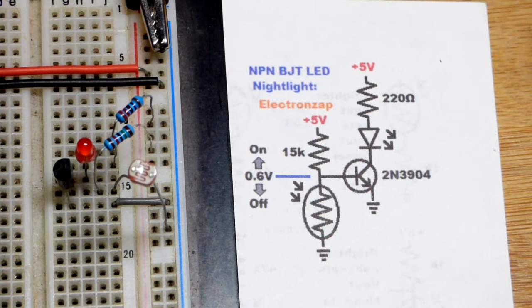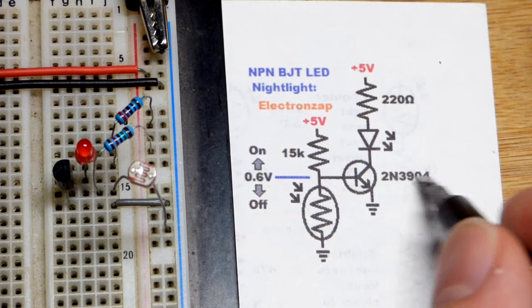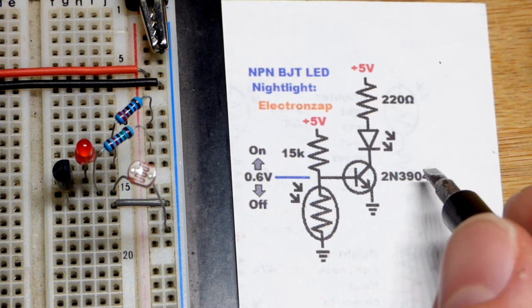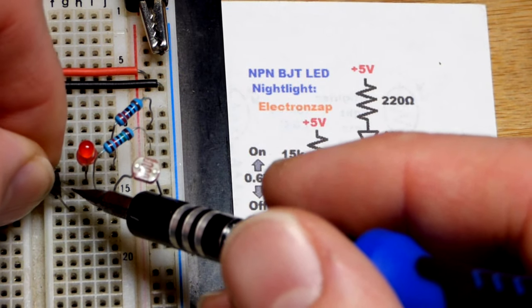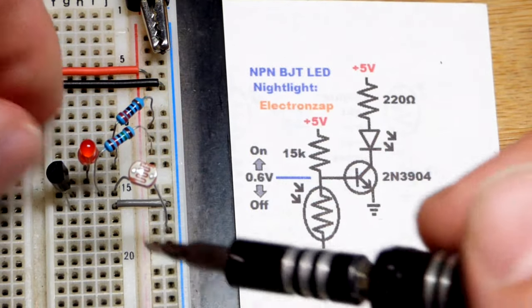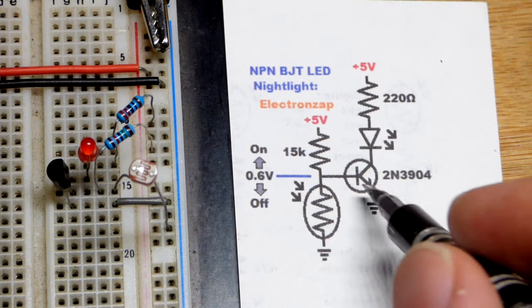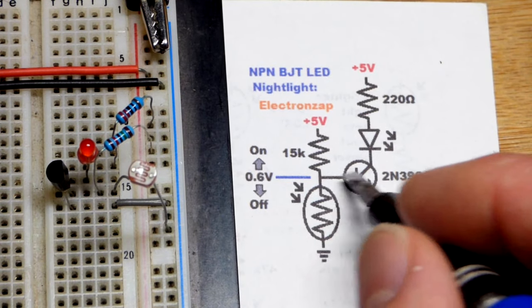The NPN bipolar junction transistor, whether using 2N3904 or other ones: emitter is the left pin which is the bottom, base in the middle, collector is the right pin or the pin on top. It's not going to conduct if there's no base to emitter current.